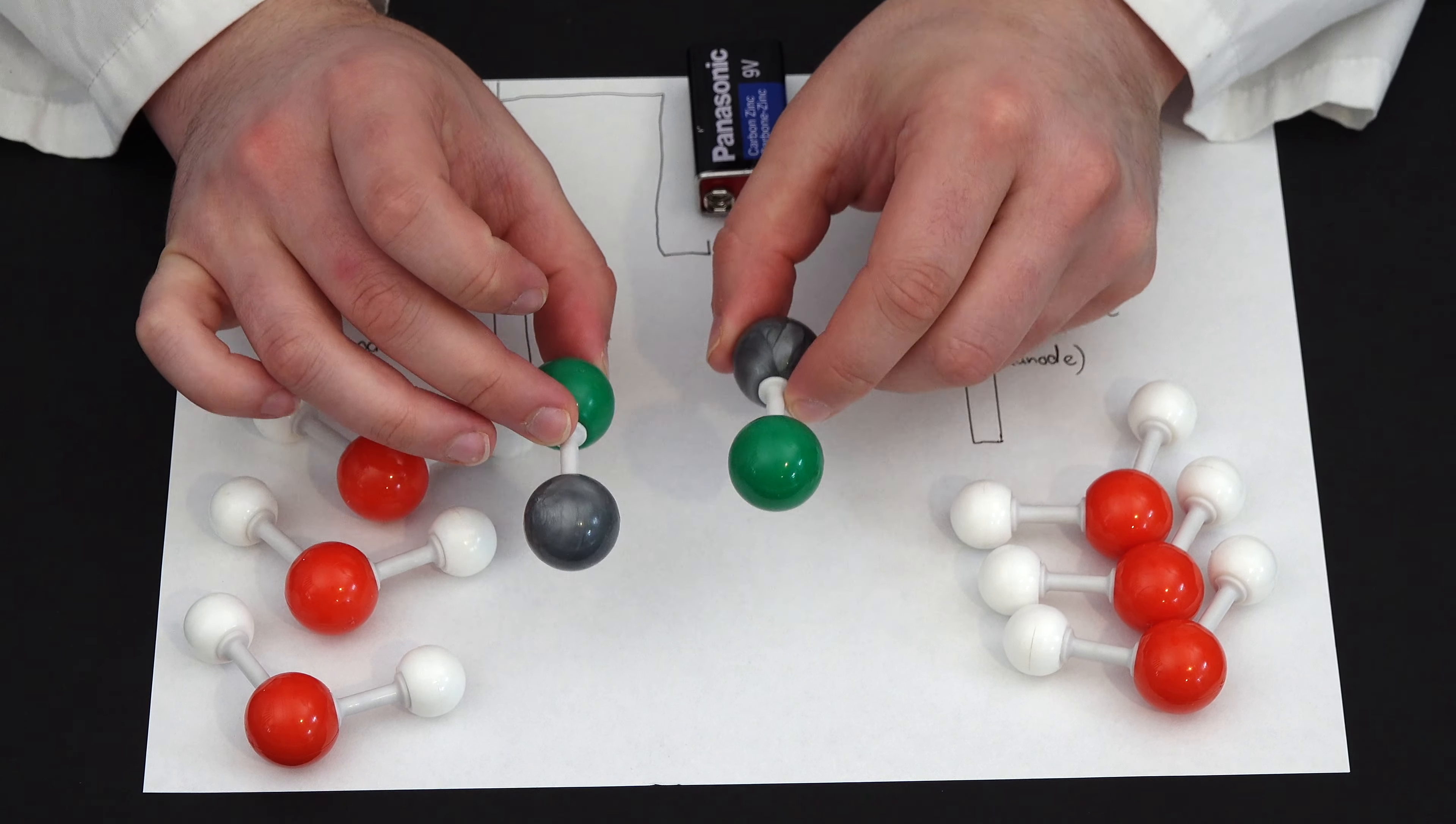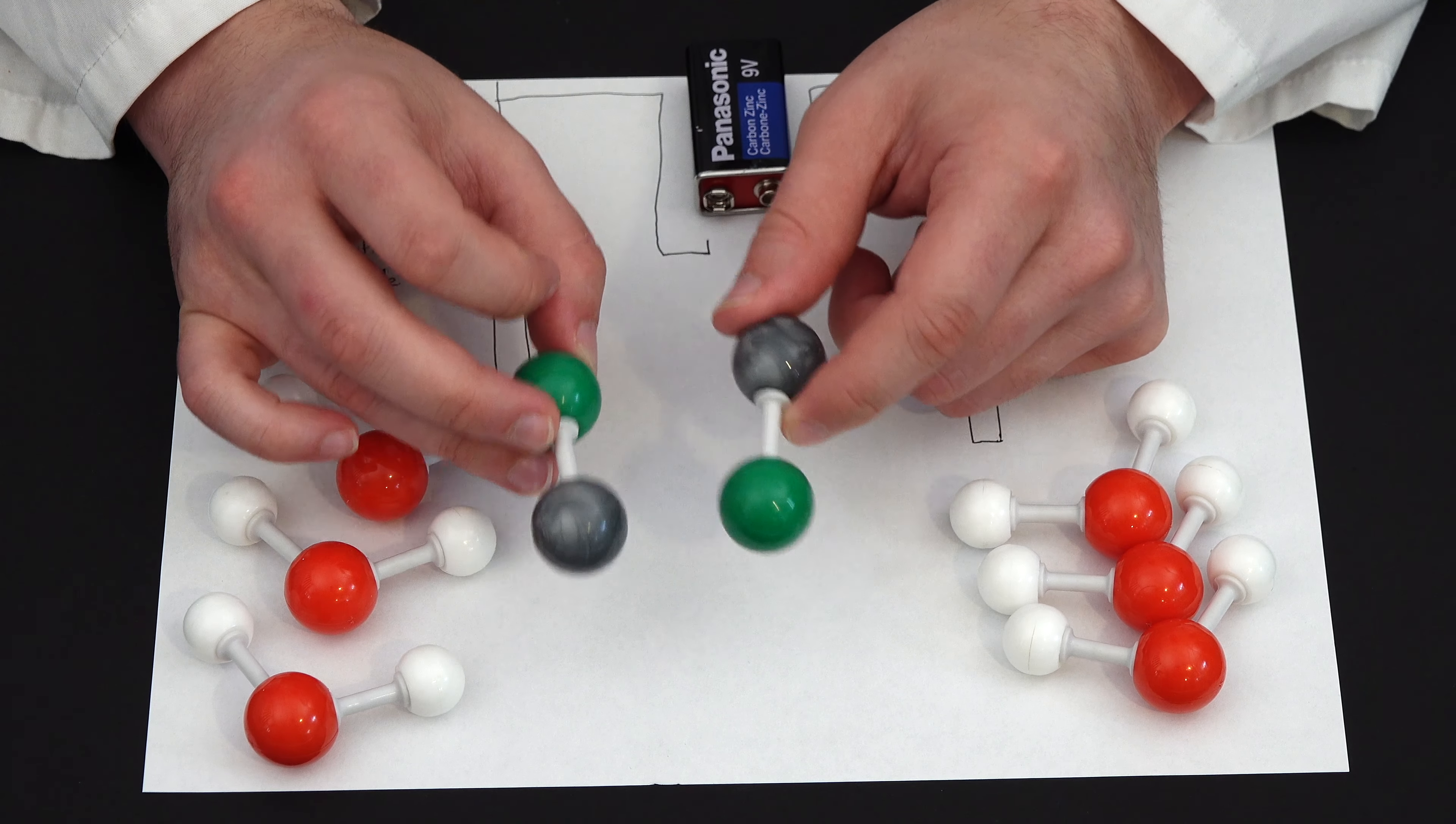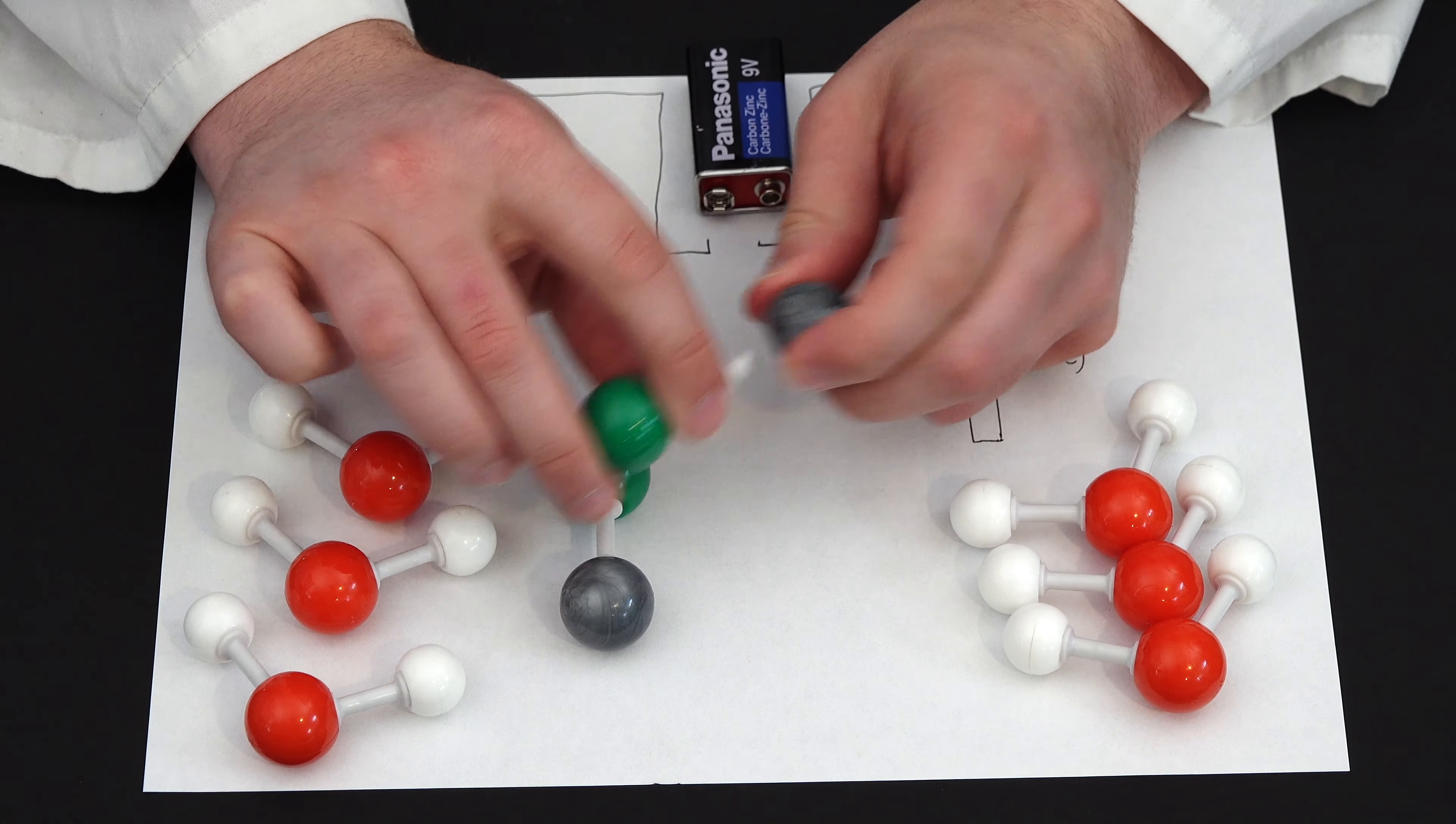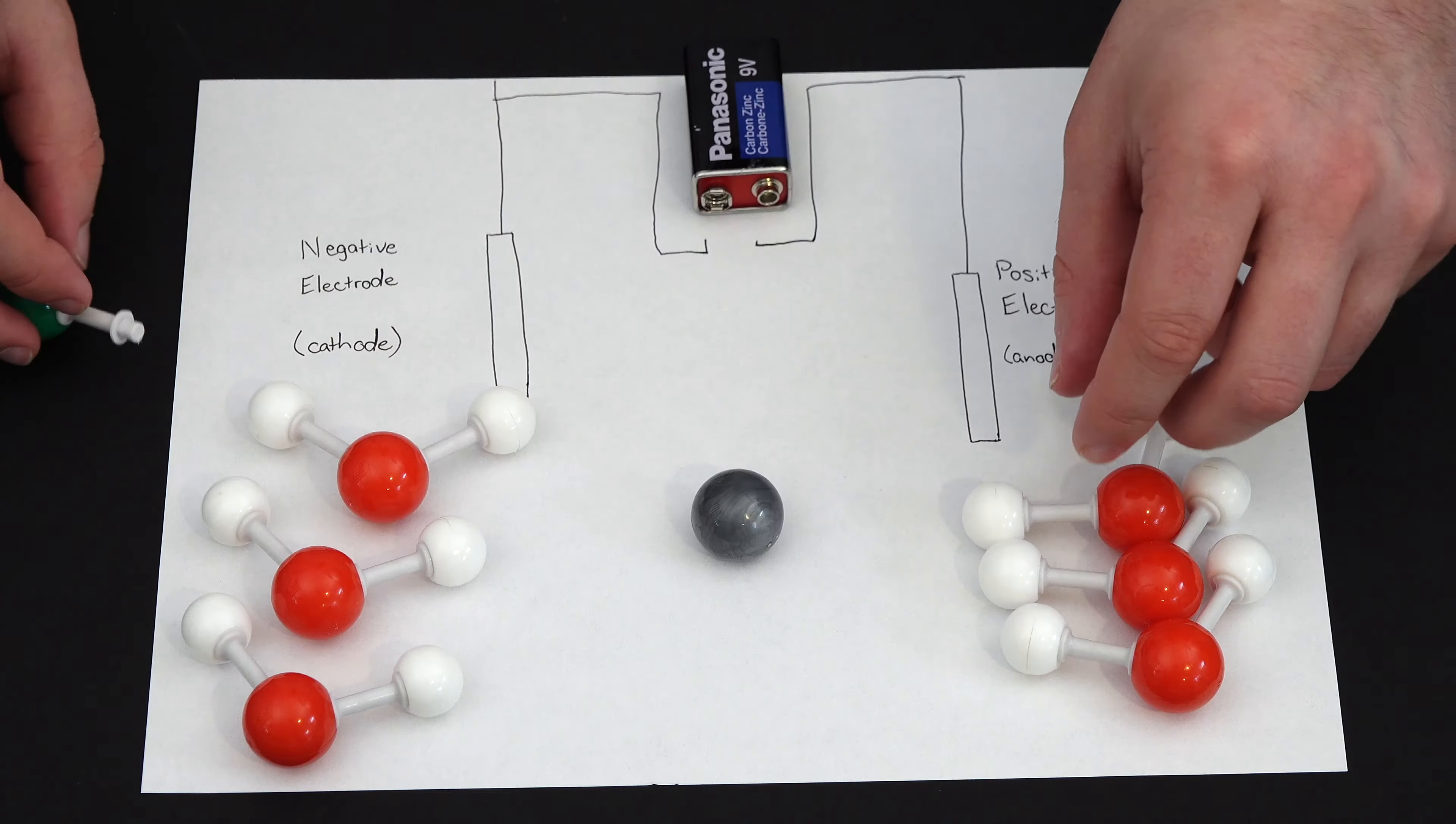So when you add sodium chloride to water, because sodium ions or sodium chloride is an ionic compound, ionic compounds, when they dissolve in water, actually dissociate. So it doesn't remain as a piece of sodium chloride. It separates into a sodium ion and a chloride ion.